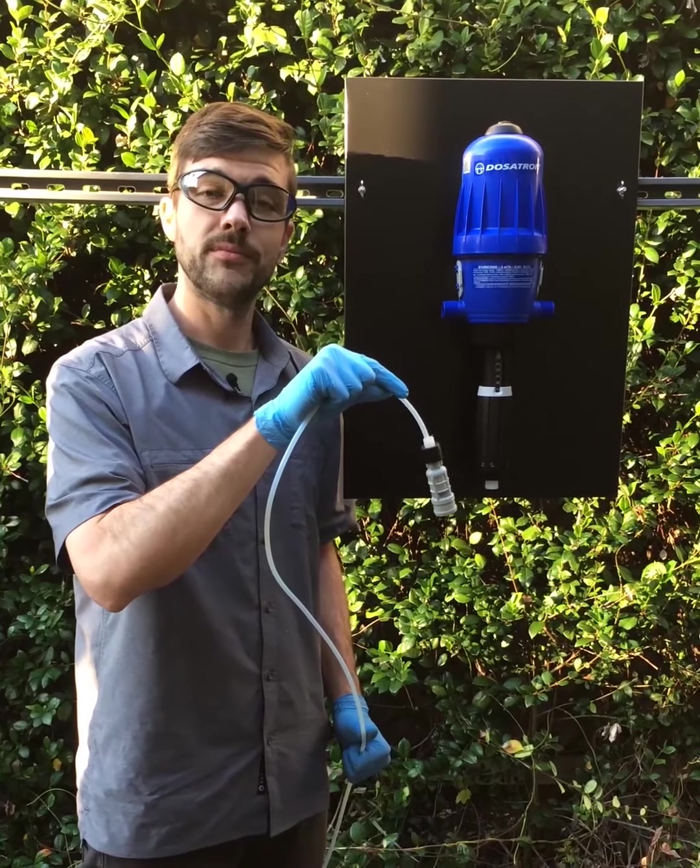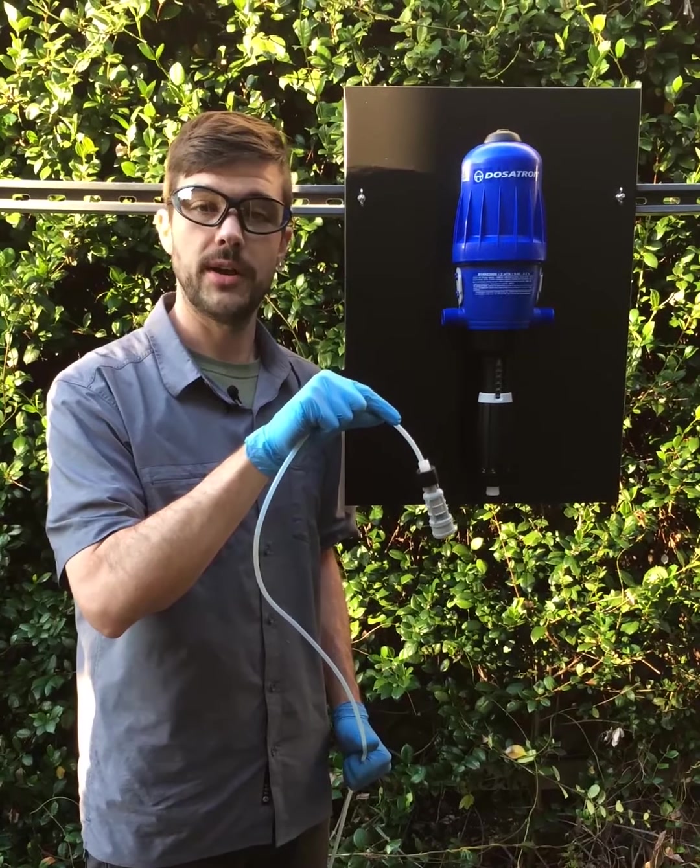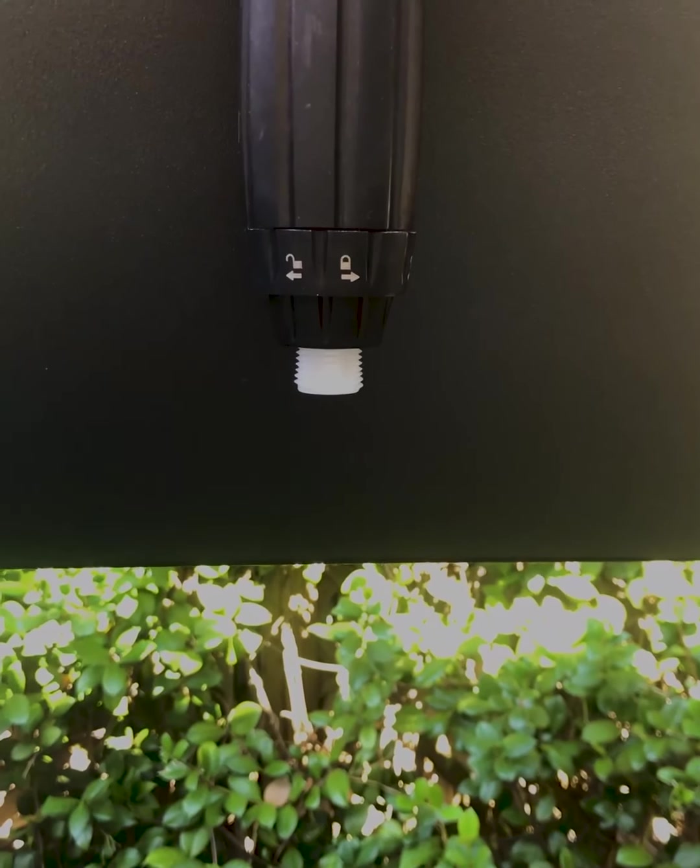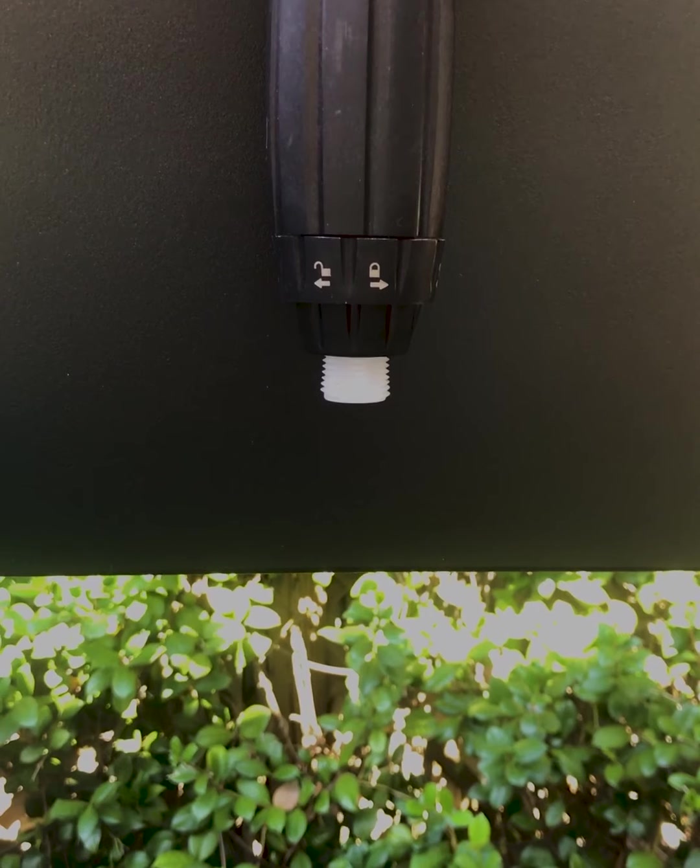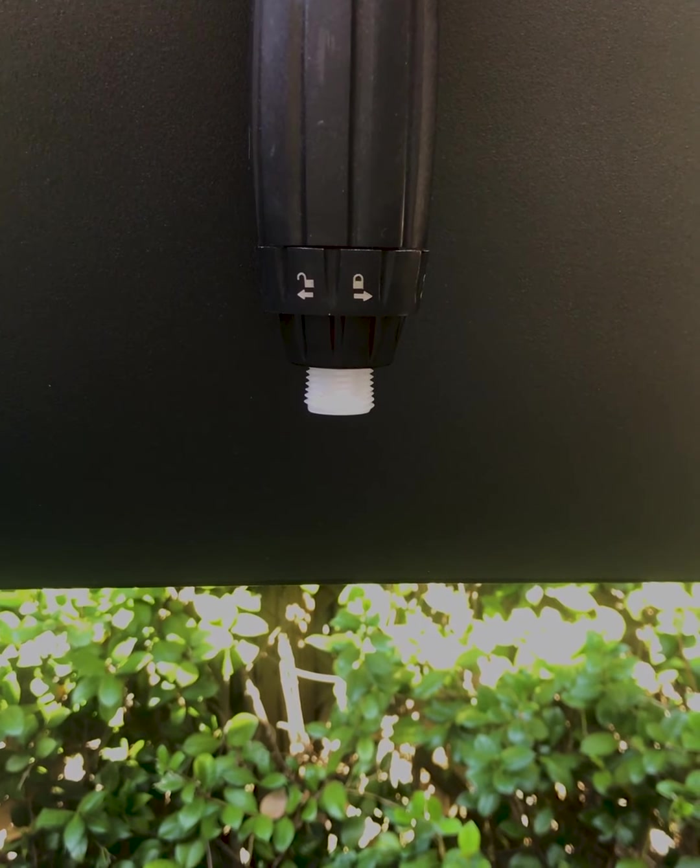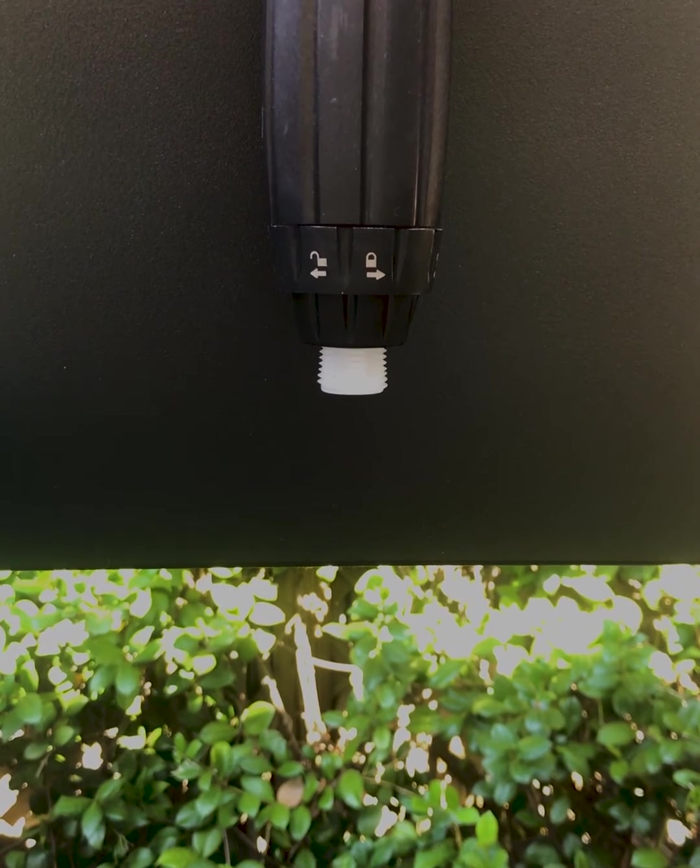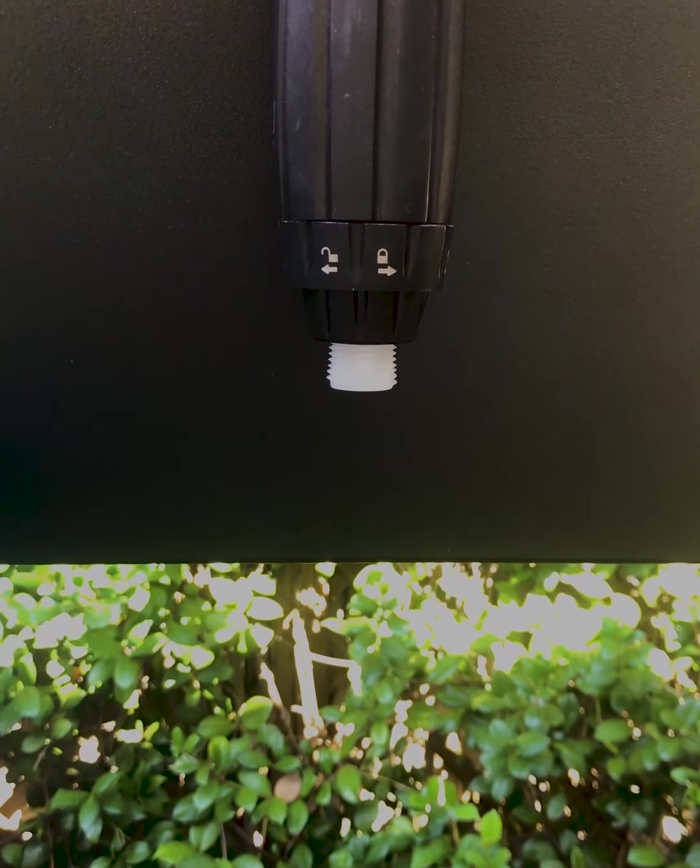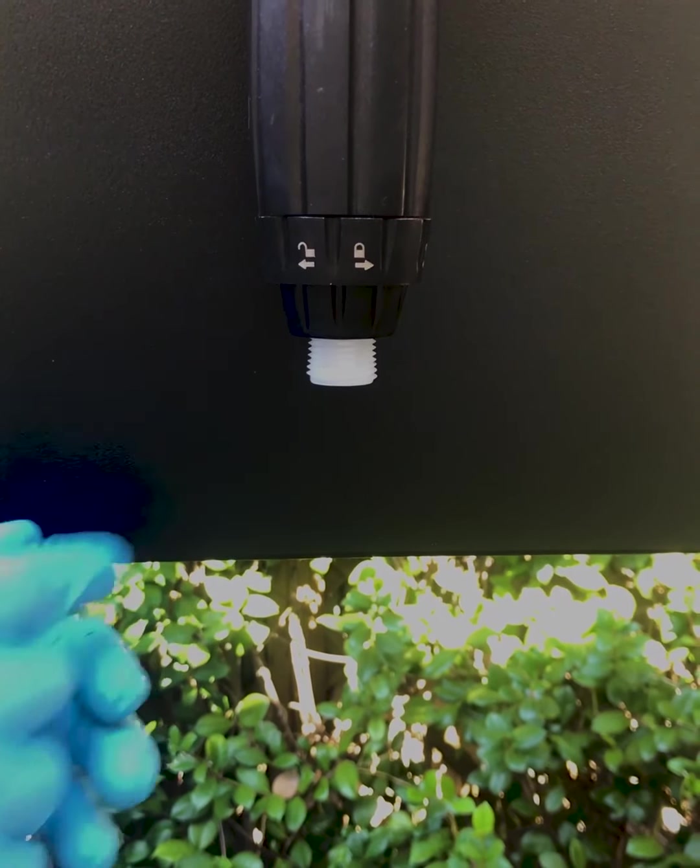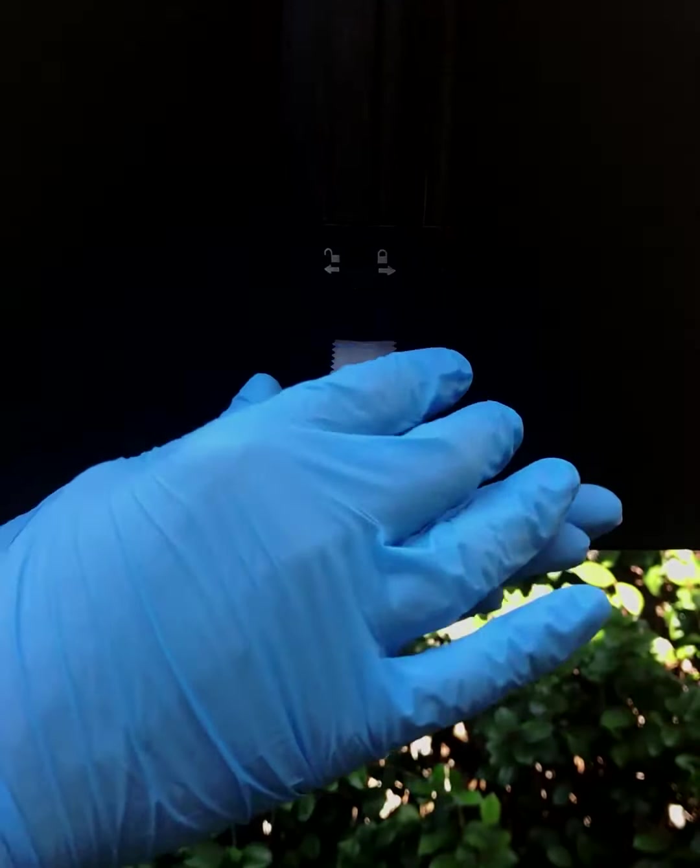You can now reinsert your strainer into your concentrate and we can move on to checking the check valve assembly. Keep in mind, there may still be undiluted chemical inside the stem assembly and to take all proper precautions when handling these components.